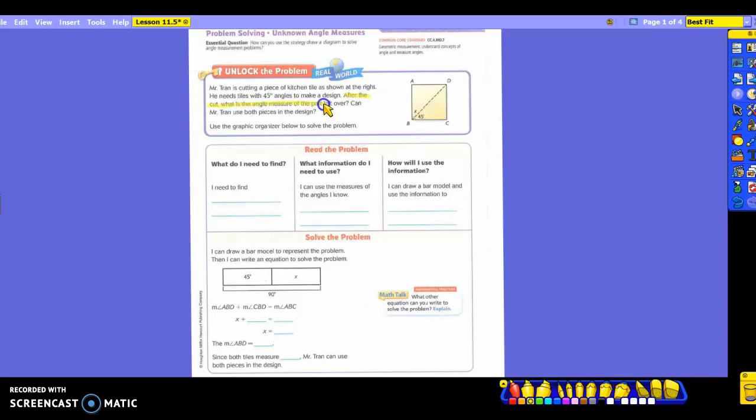It says after the cut, what is the angle measure of the part that is left over? That is your first question. The next one then asks you, can Mr. Tran use both pieces in the design? So what information out of here do I need to circle, as we always do? The 45 degrees. The tiles need to have a 45 degree angle to make a design.